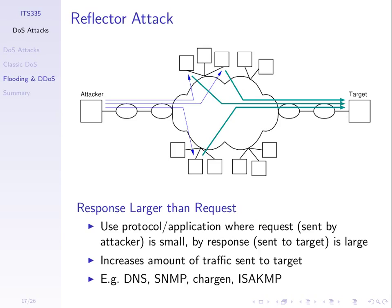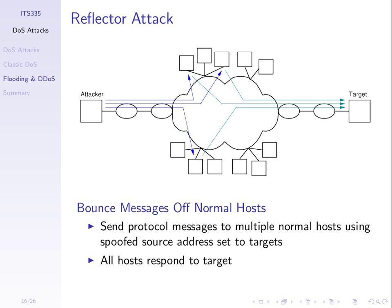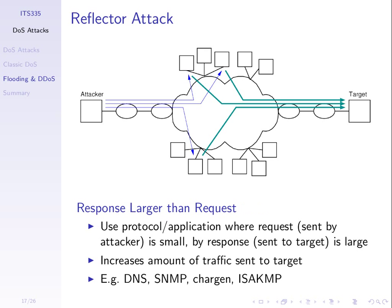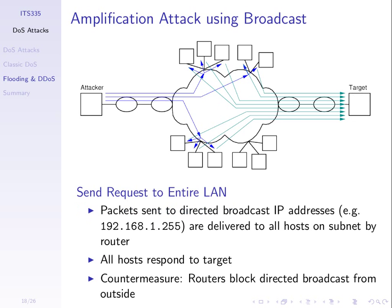One way to increase the amount of traffic is to send more ping requests, or make the individual packets larger — increasing the number of bytes in those packets. We'll do some calculations shortly, but first I want to introduce one more concept before we see a demo.